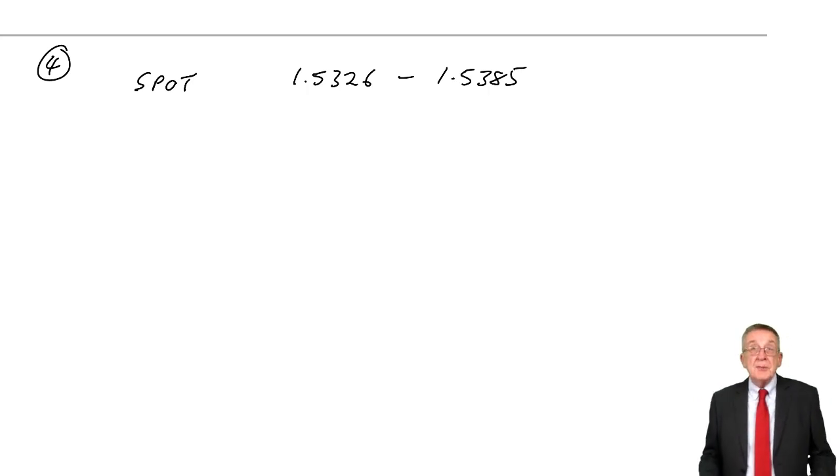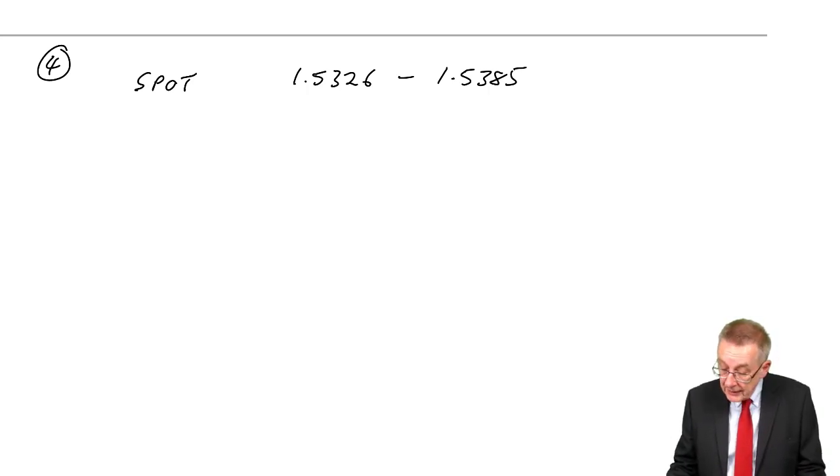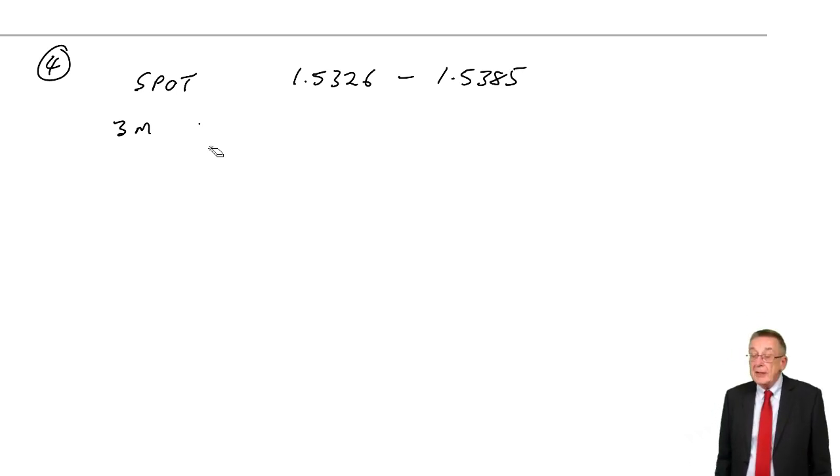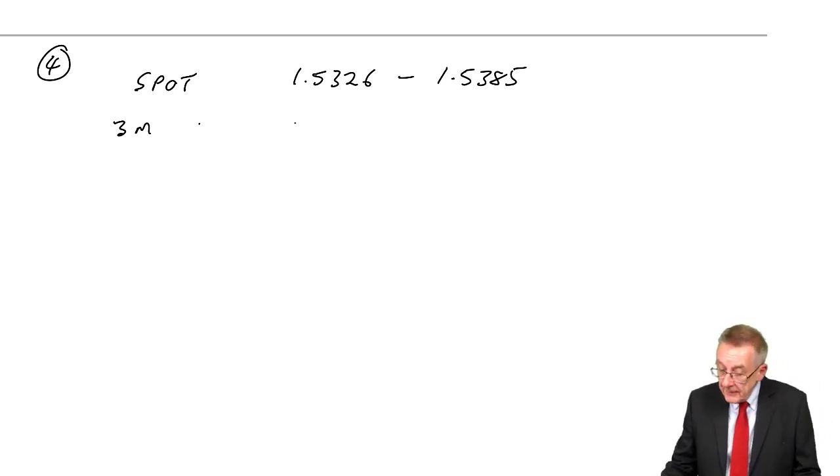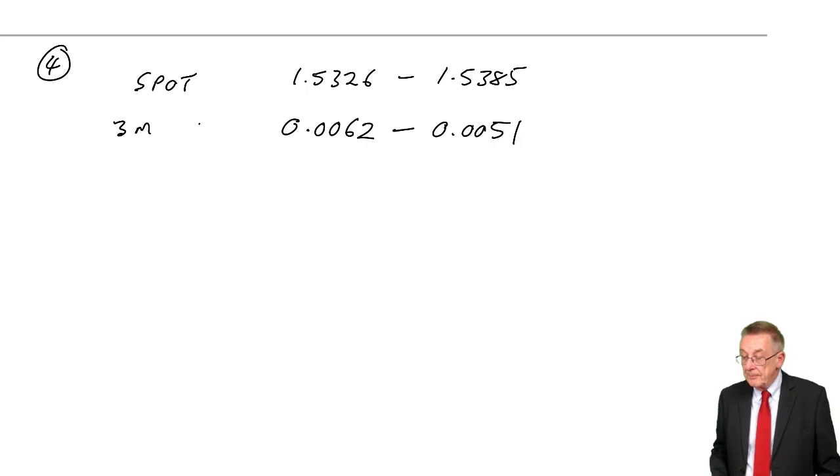So the spot rate, if we're converting today, it's 1.5326 to 1.5385. But instead of quoting the forward rate for three months' time as exact rates, the papers quote it as a difference. The difference from spot is 0.62 to 0.51. However, two things here. First of all, it's quoted in the smaller currency. It's 0.62 cents to 0.51 cents. Well, 0.62 cents is 0.0062 dollars. And 0.51 of a cent is 0.0051 dollars. So that's the first trick.